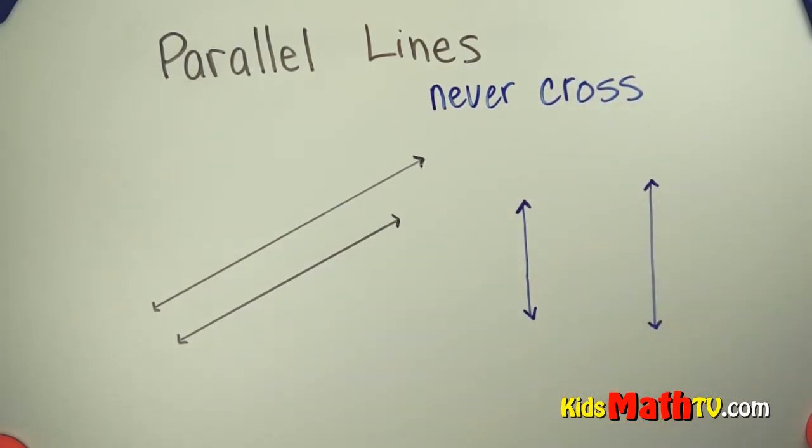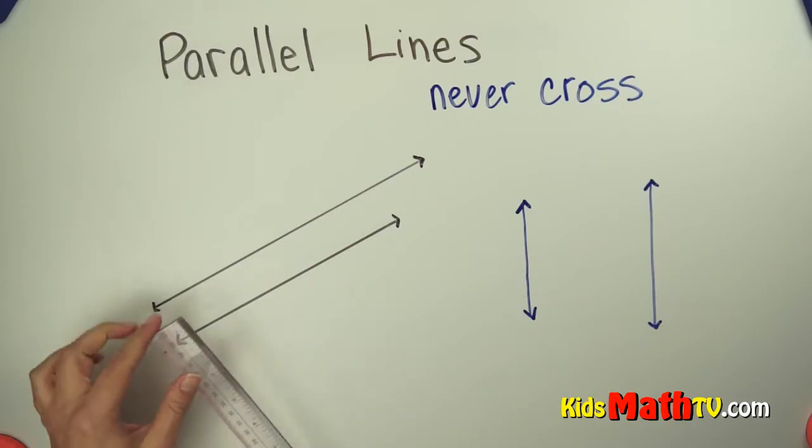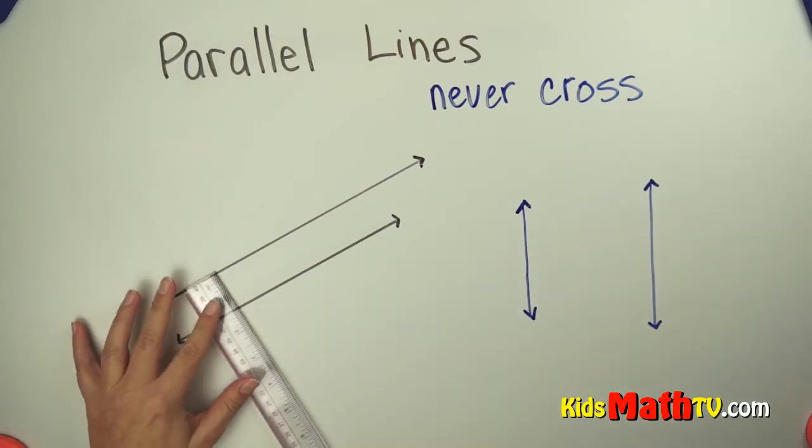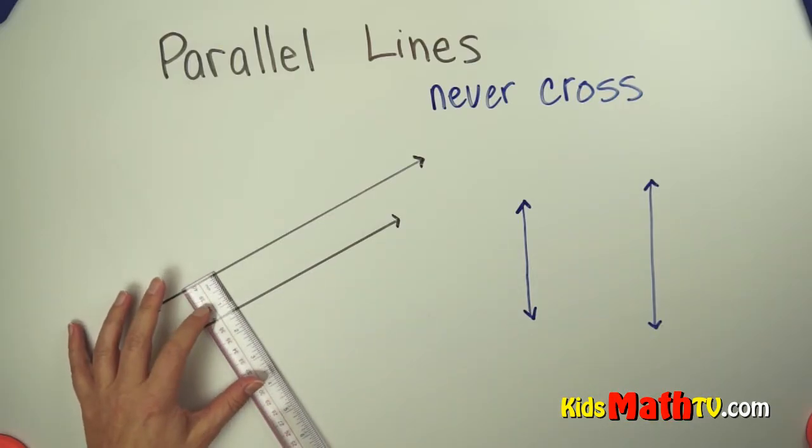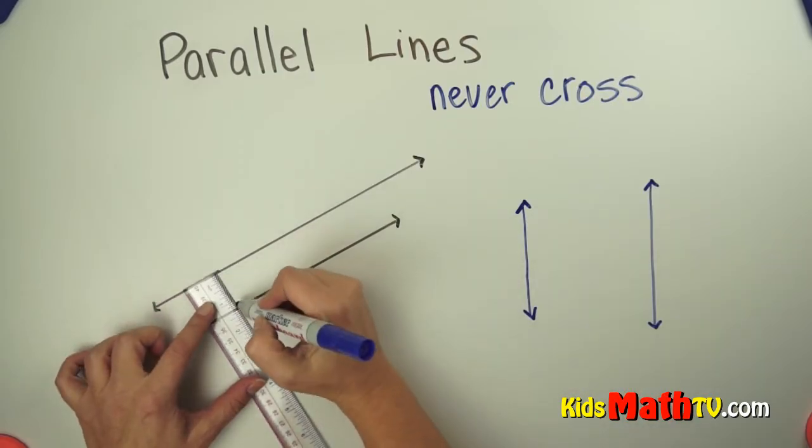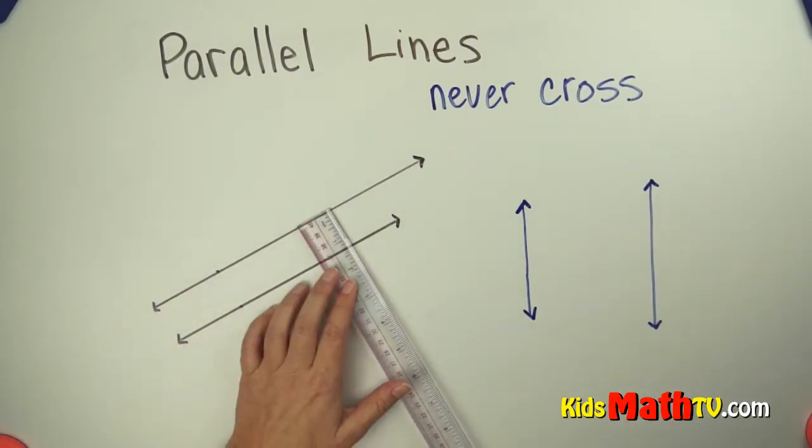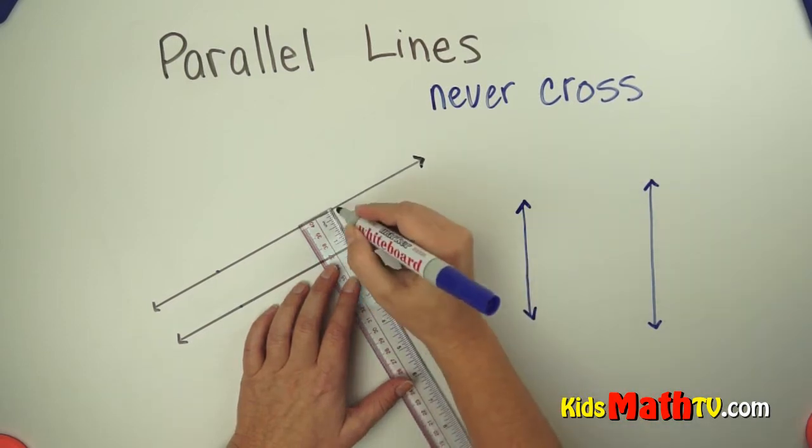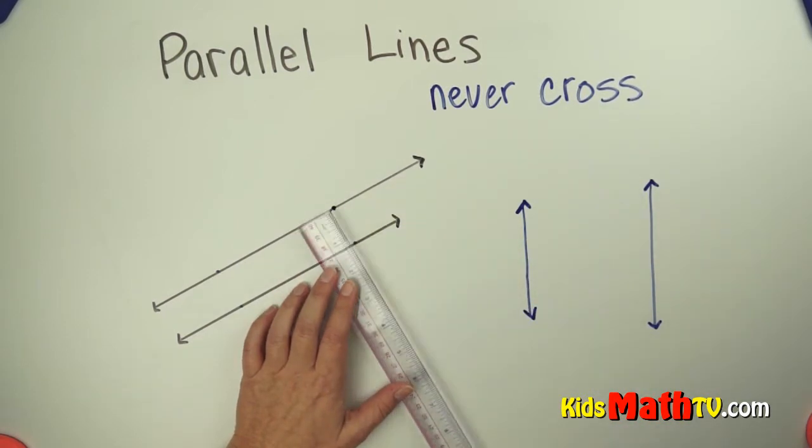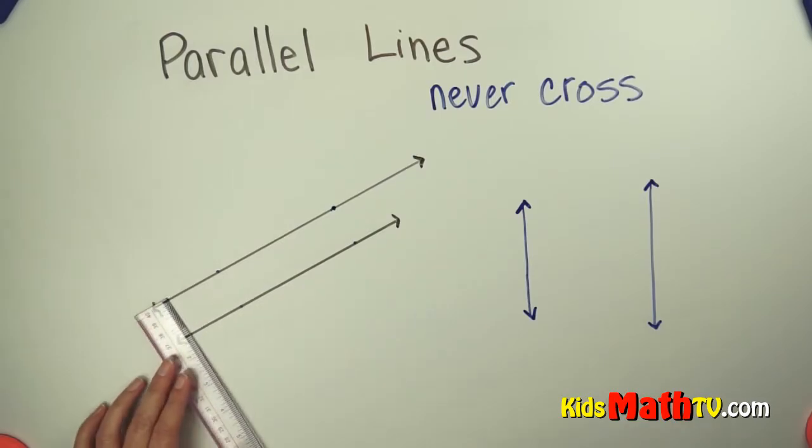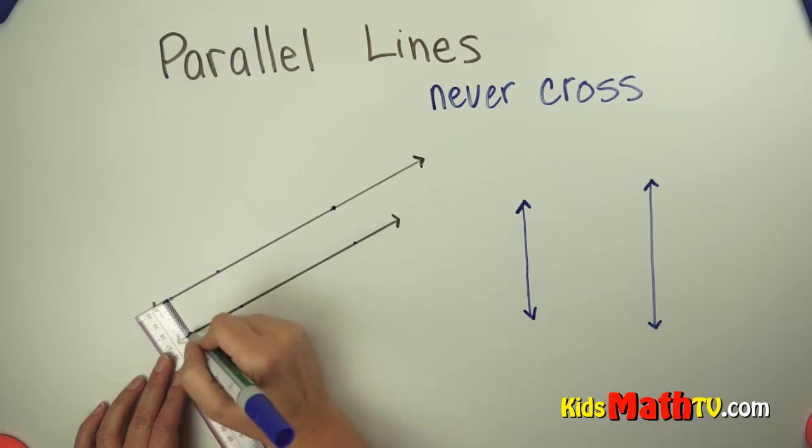And the way that you can tell if two lines are parallel is you can measure them. So if we take this and we measure these two lines, it looks like just about at these two points, we're right at about one and a quarter inches there, and then if I measure at another two points, we're again at one and a quarter inches, and we can measure anywhere on these lines and it would be right about the same.